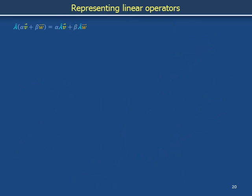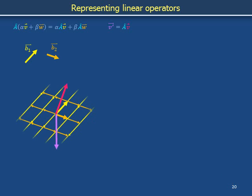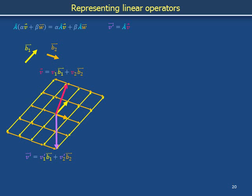We want to express the behavior of a linear operator using the language of a basis set and coordinate grid. Purple v-prime denotes the result of applying a-hat to magenta v. We can use basis set b1 and b2 to establish a coordinate grid for describing both vectors. Vector v is specified using weighting coefficients v1 and v2, while vector v-prime is represented using weighting coefficients v-prime 1 and v-prime 2.